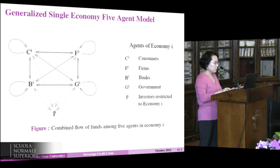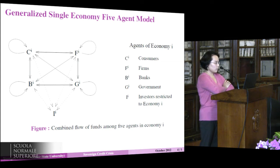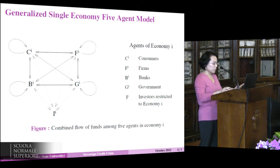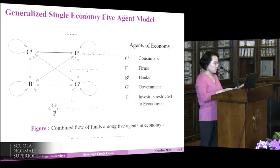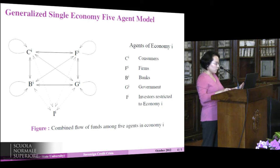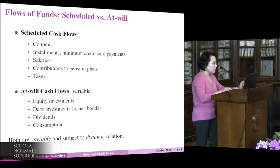When we generalize to a single economy, the upper index I denotes economy I, and each agent inherits that upper index. Going back to the flows of funds chart, each arrow represents flows of a fund. We can divide flows of funds into two categories: scheduled and at will.